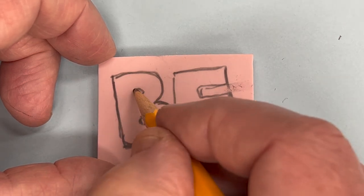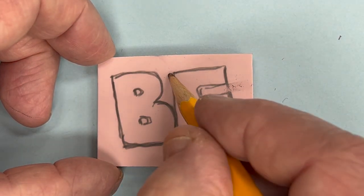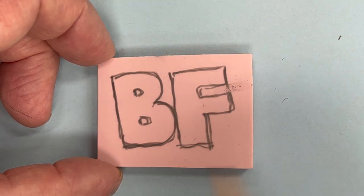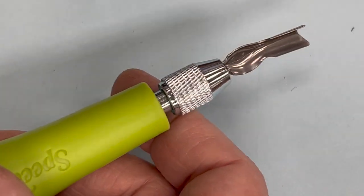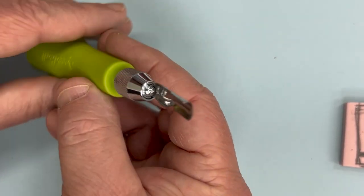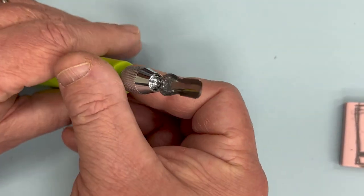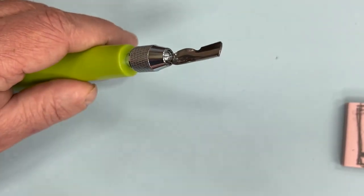I'll draw BF on the stamp material and will carve away those letters using this sharp tool. It's really sharp. What can I do to make sure I stay safe using this tool? Do you have some ideas?